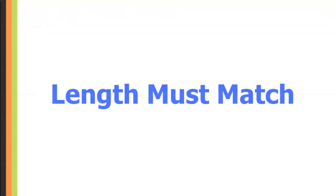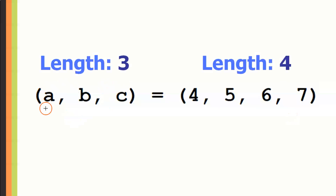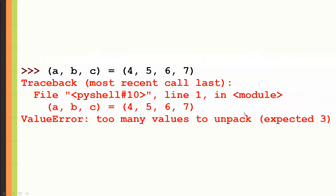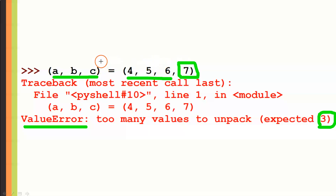Another important aspect of tuple assignment is that the length of the tuples must match. If the left-hand tuple has 3 variables but the right-hand tuple has 4 values — 4, 5, 6, and 7 — these lengths do not match. In tuple assignment, each value must have a corresponding variable, so Python will throw a ValueError saying there were too many values to unpack because 3 were expected. Make sure the lengths of both tuples match.